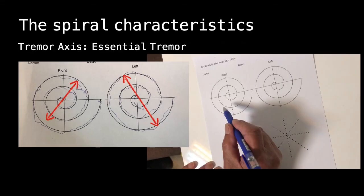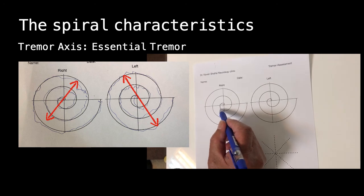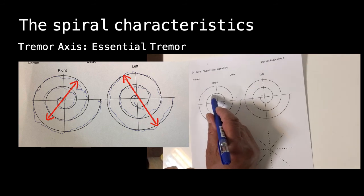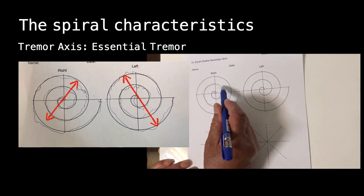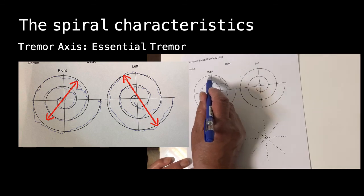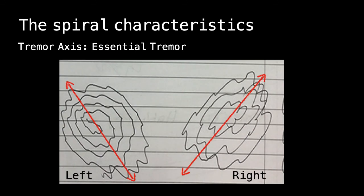Tremor axis is maybe the most helpful characteristic of spirals, because in essential tremor there is often an axis. As shown in this picture, for left hand it's from 10 o'clock to 4, and for right hand from 8 to 2. It's always the same—anytime your essential tremor patient draws spirals, you can find this axis. It's very important to differentiate between essential tremor and Parkinsonian tremor.